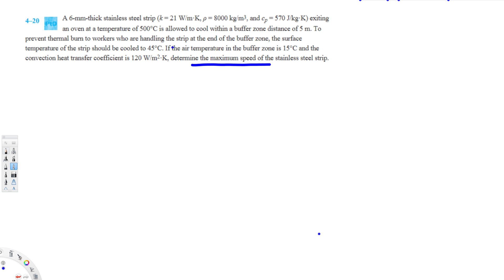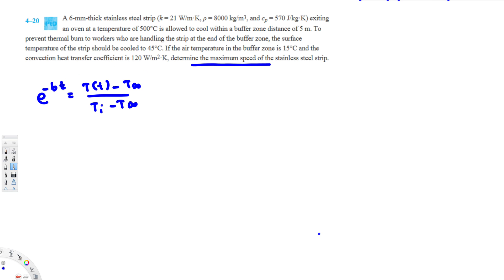Whenever we have information like this, the first thing we consider is whether we can do the lumped system analysis. If we can, we can find the speed because for lumped system analysis we have the equation e to the power of negative Bt equals (T - T_infinity) over (Ti - T_infinity). From this we can find the speed, because time T can be replaced with distance over speed, x over v. But first we must verify whether this problem passes the lumped system analysis.